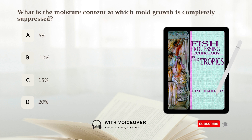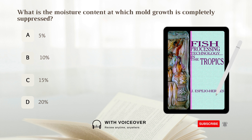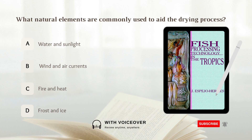What is the moisture content at which mold growth is completely suppressed? What natural elements are commonly used to aid the drying process? A. Wind and air currents. C. Fire and heat. D. Frost and ice. Answer: B. Wind and air currents.